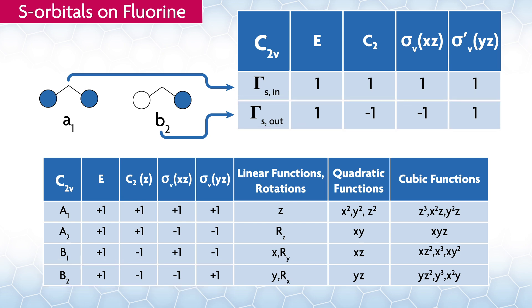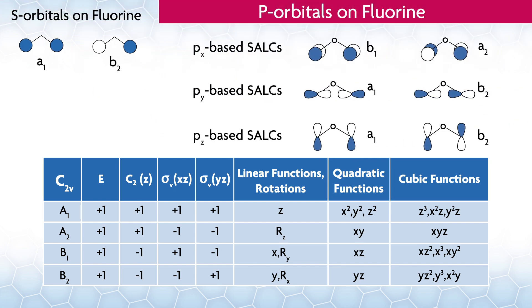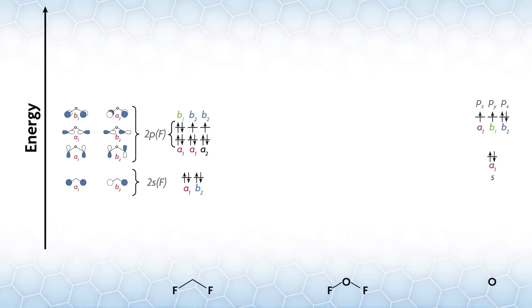So we have this for the s orbitals on the fluorines of OF2. The p orbitals on fluorine can be done similarly and look like this. If you think about the symmetry operations and compare those to the character table, you should be able to confirm that these have these symmetries. We have the SALCs for the orbitals on the fluorines away from the central atom. We find the oxygen orbital symmetries by simply looking at the character table, then both sides of our MO diagram can be set up. The orbitals on the fluorines, since it's more electronegative, will be somewhat lower in energy.